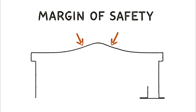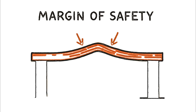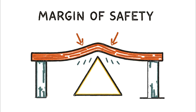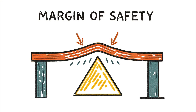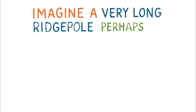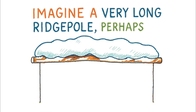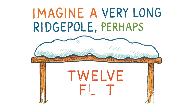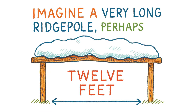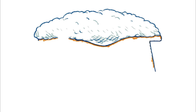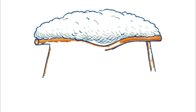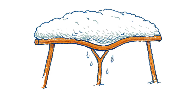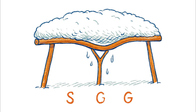You have to build in a margin of safety by anticipating how the structure might fail. Imagine a very long ridge pole spanning 12 feet. Under the weight of heavy wet snow, its most likely failure point is right in the middle, where it will begin to sag and eventually snap.